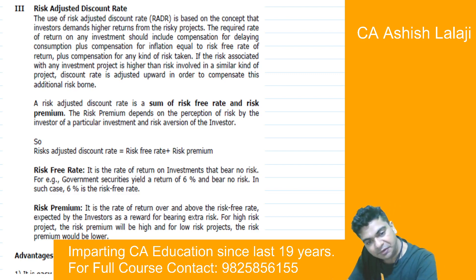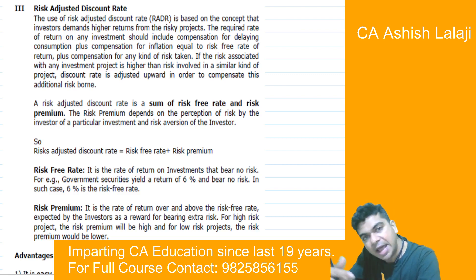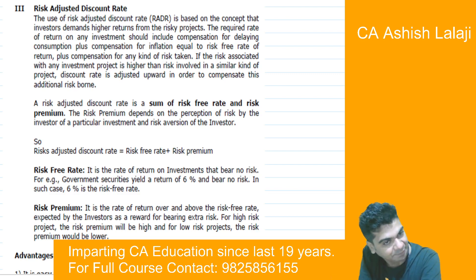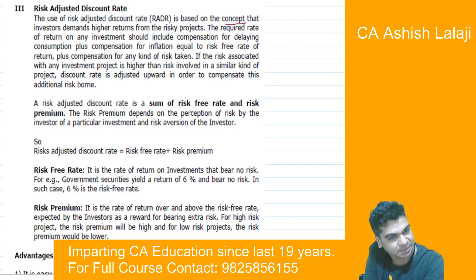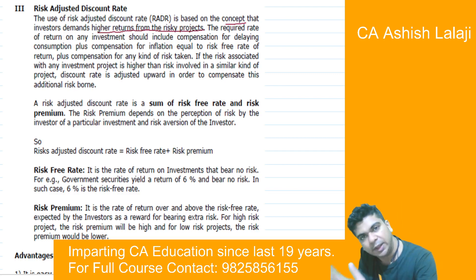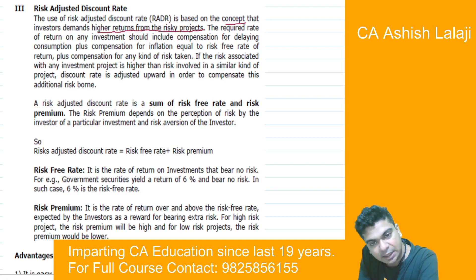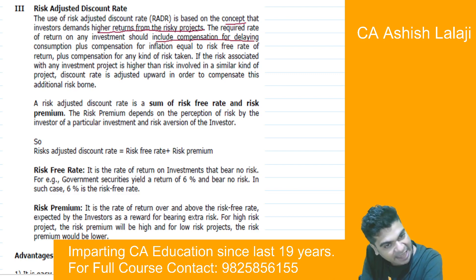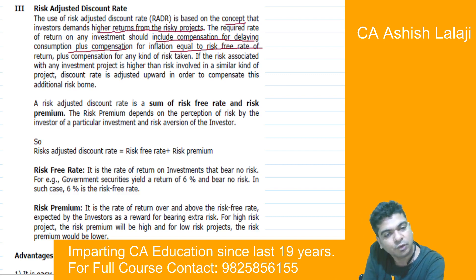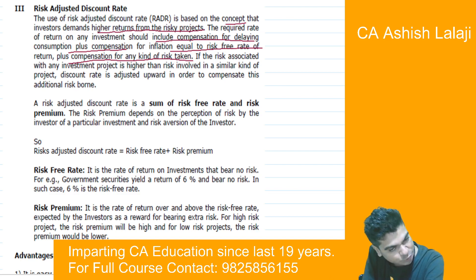The risk-adjusted discount rate is based on the concept that investors demand higher return from risky projects. The required rate of return on any investment should include compensation for delaying consumption plus compensation for inflation — equal to the risk-free rate of return — plus compensation for any kind of risk taken.